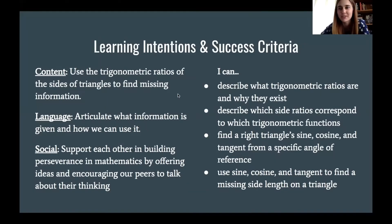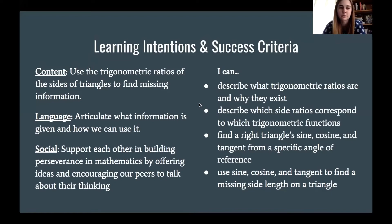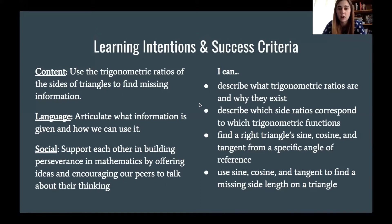Let's look at our learning intentions and our success criteria today as we are learning about trigonometry. Our content purpose of the day is to use trigonometric ratios of the sides of triangles to find missing information. We're going to go a step further past the Pythagorean theorem and use something called sine, cosine, and tangent to help us think about how we can solve for information in triangles.